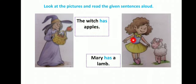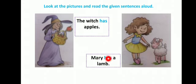Now here, यह जो लड़की है, उसका नाम Mary है। उसके पास lamb है। Mary जो है, वो girl का नाम है। और girl के लिए she use होता है। So she के साथ has use होगा। Mary has a lamb.